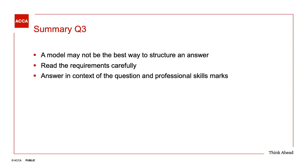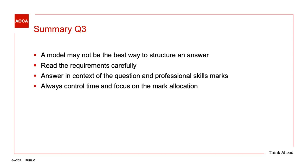Make sure we answer in the context of the question and use those professional skills marks as the lens through which we gain our technical marks. For question 3C, it was asking us to think about the benefits of a separate risk committee using commercial acumen — candidates who scored well did this and thought about the commercial benefits to the business. Those that didn't link the professional and technical skills together just gave a generic answer on what a risk committee does, which wasn't required and wouldn't have scored many marks. Control of time and focus: 40 marks here broken down into three areas, so it's critical to have very good control of time and ensure your plan focuses on the marks being awarded.